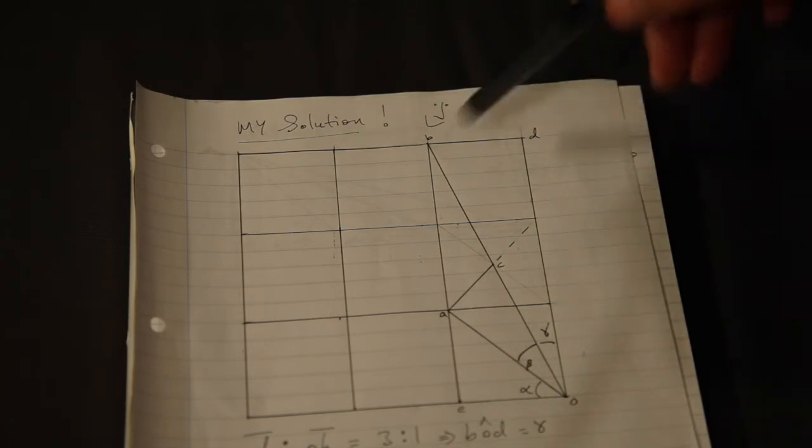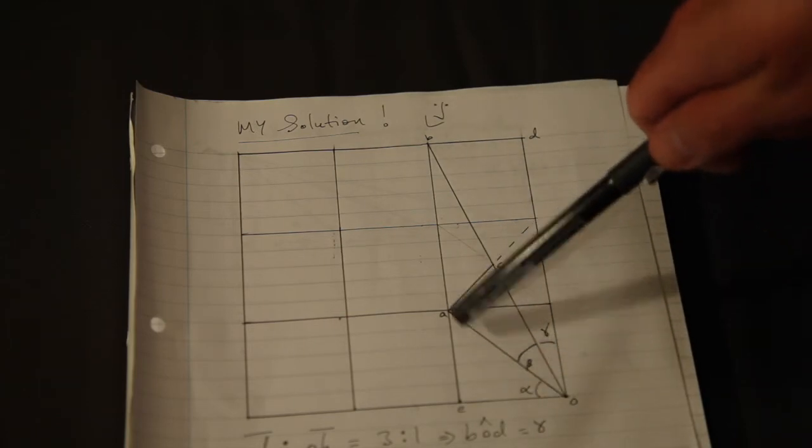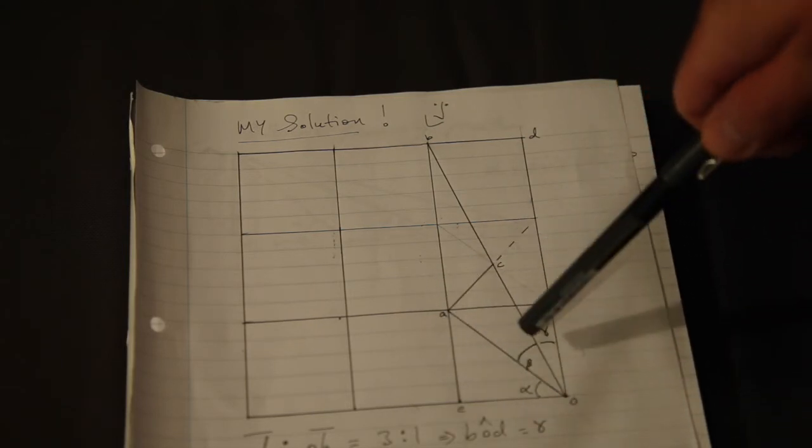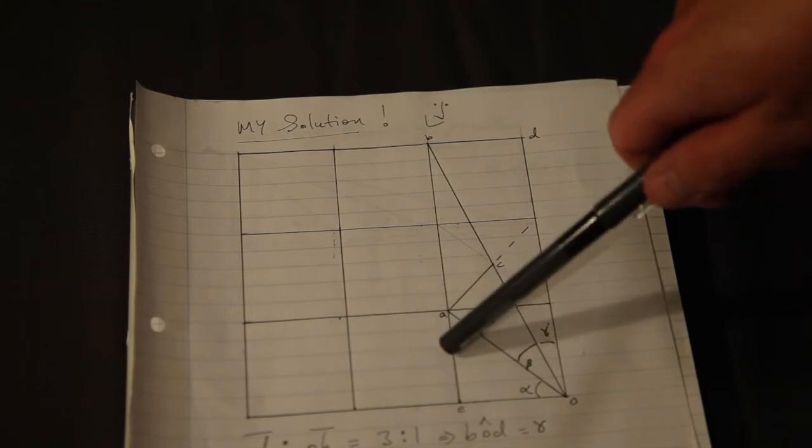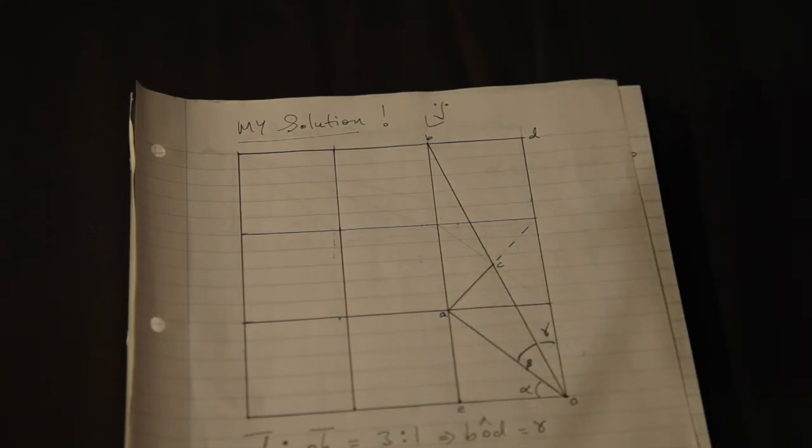And I've drawn this construction. So alpha, this angle here, is the angle of a right-angled triangle, and you can see that the ratio of the opposite to the adjacent there is one-to-one. So that is clearly alpha.